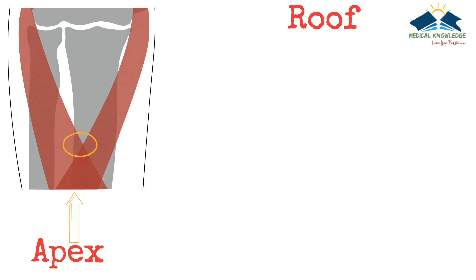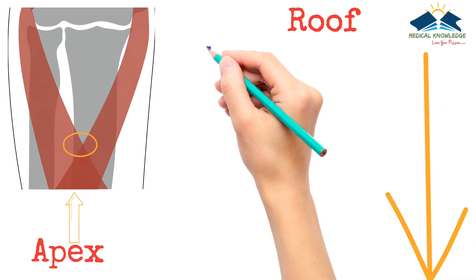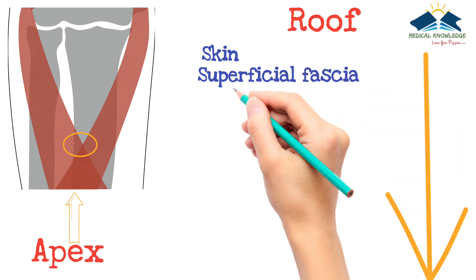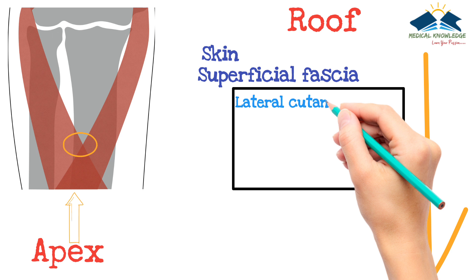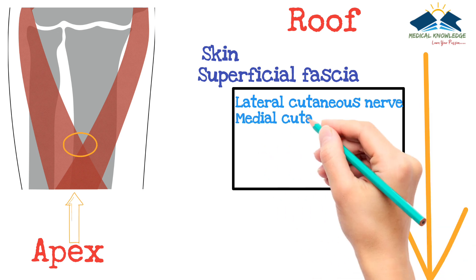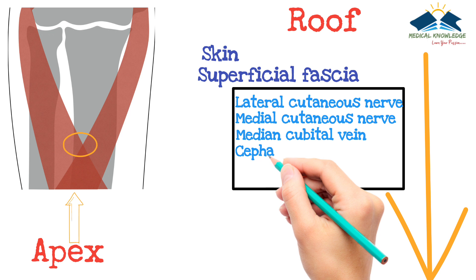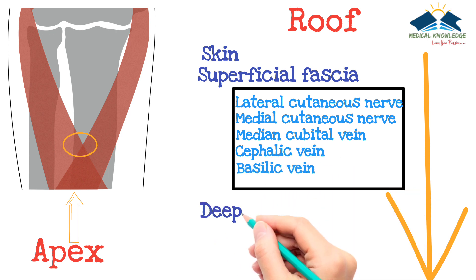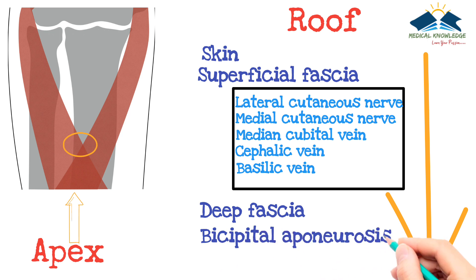The roof of the cubital fossa is formed by, from above downward respectively: first, skin; second, superficial fascia, which contains the lateral cutaneous nerve, medial cutaneous nerve, median cubital vein, cephalic vein, and basilic vein; third, deep fascia; and fourth, bicipital aponeurosis.